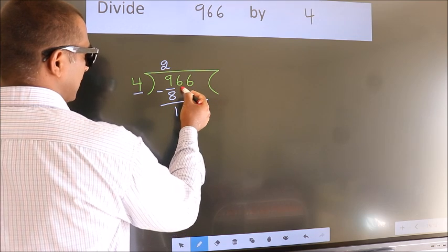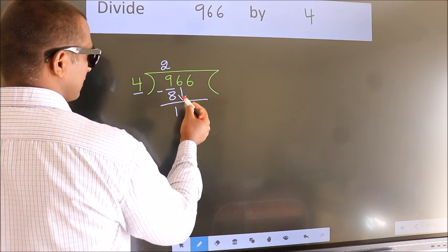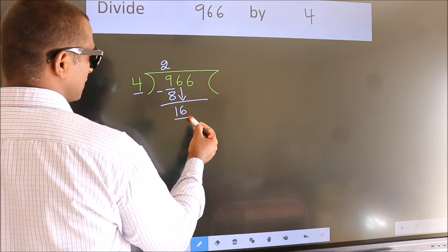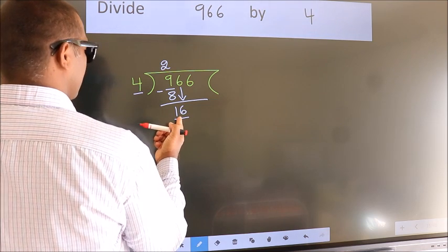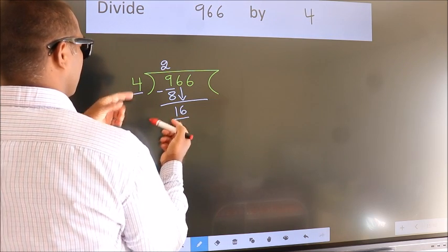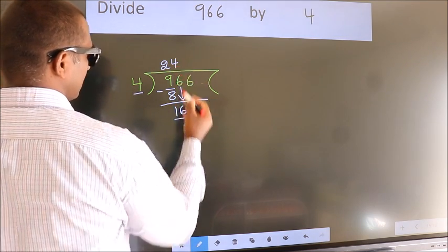After this, bring down the beside number. So, 6 down. So, 16. When do we get 16? In 4 table. 4 fours, 16.